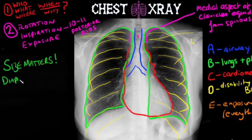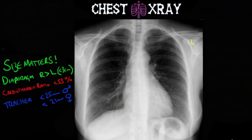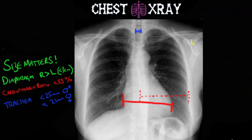Now we are going to start comparing sizes of different anatomical structures. For the diaphragm, the right diaphragm should be higher than the left, but no more than 3cm. In terms of the heart, the cardiothoracic ratio should be less than 55%, meaning the heart should fill no more than 55% of the thoracic cavity. The trachea should be less than 25mm across in a man and less than 21mm in a woman.